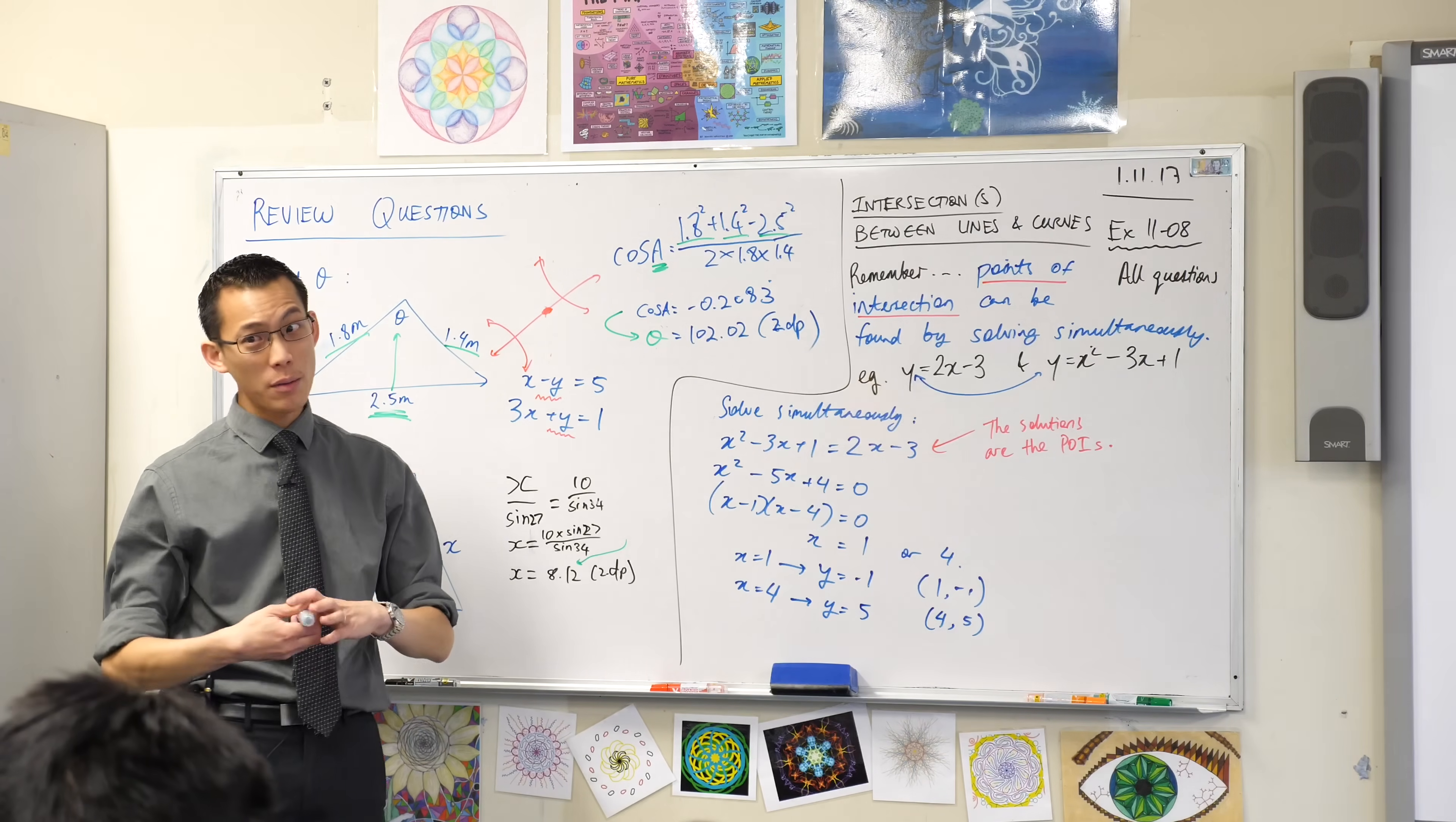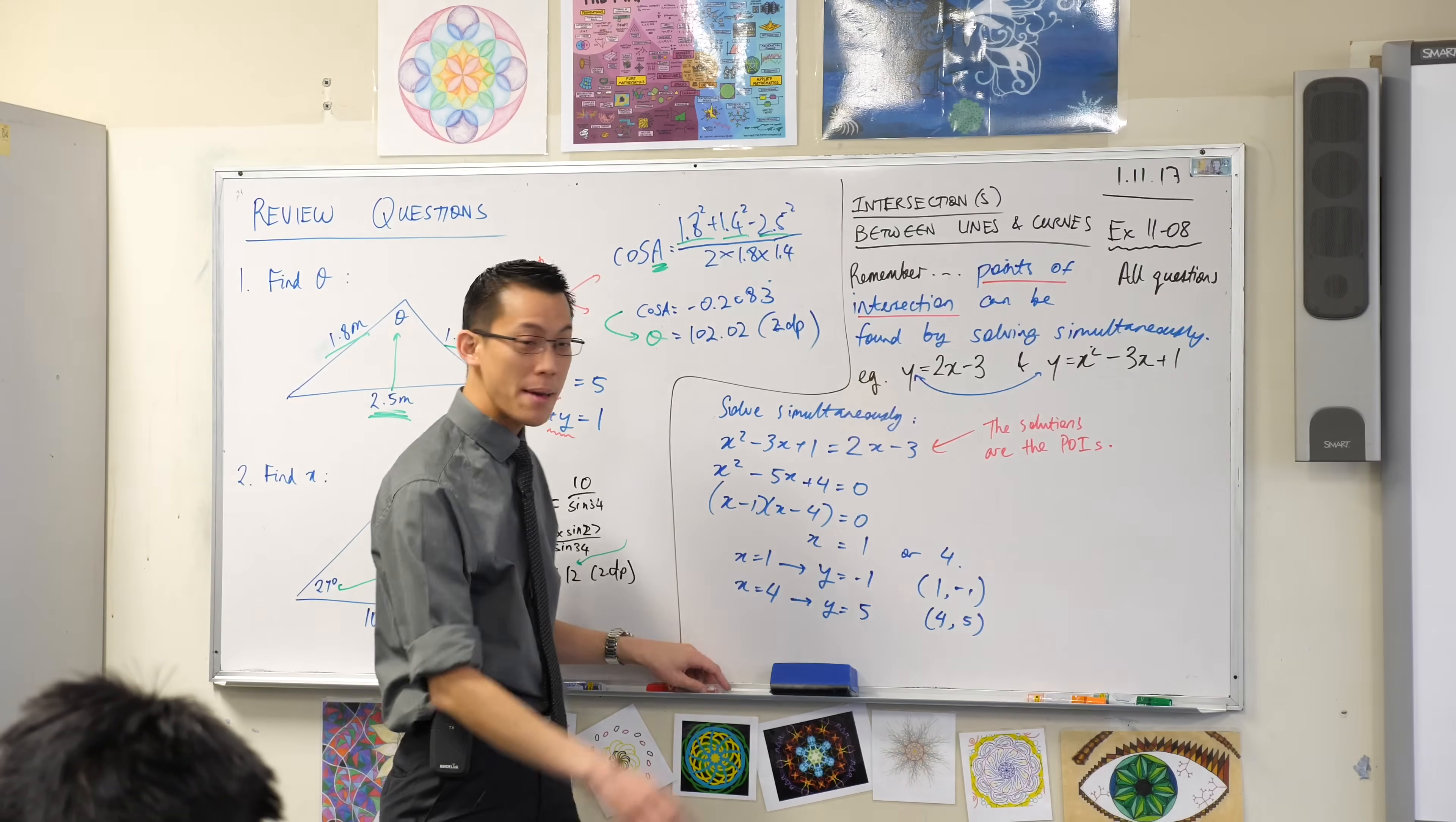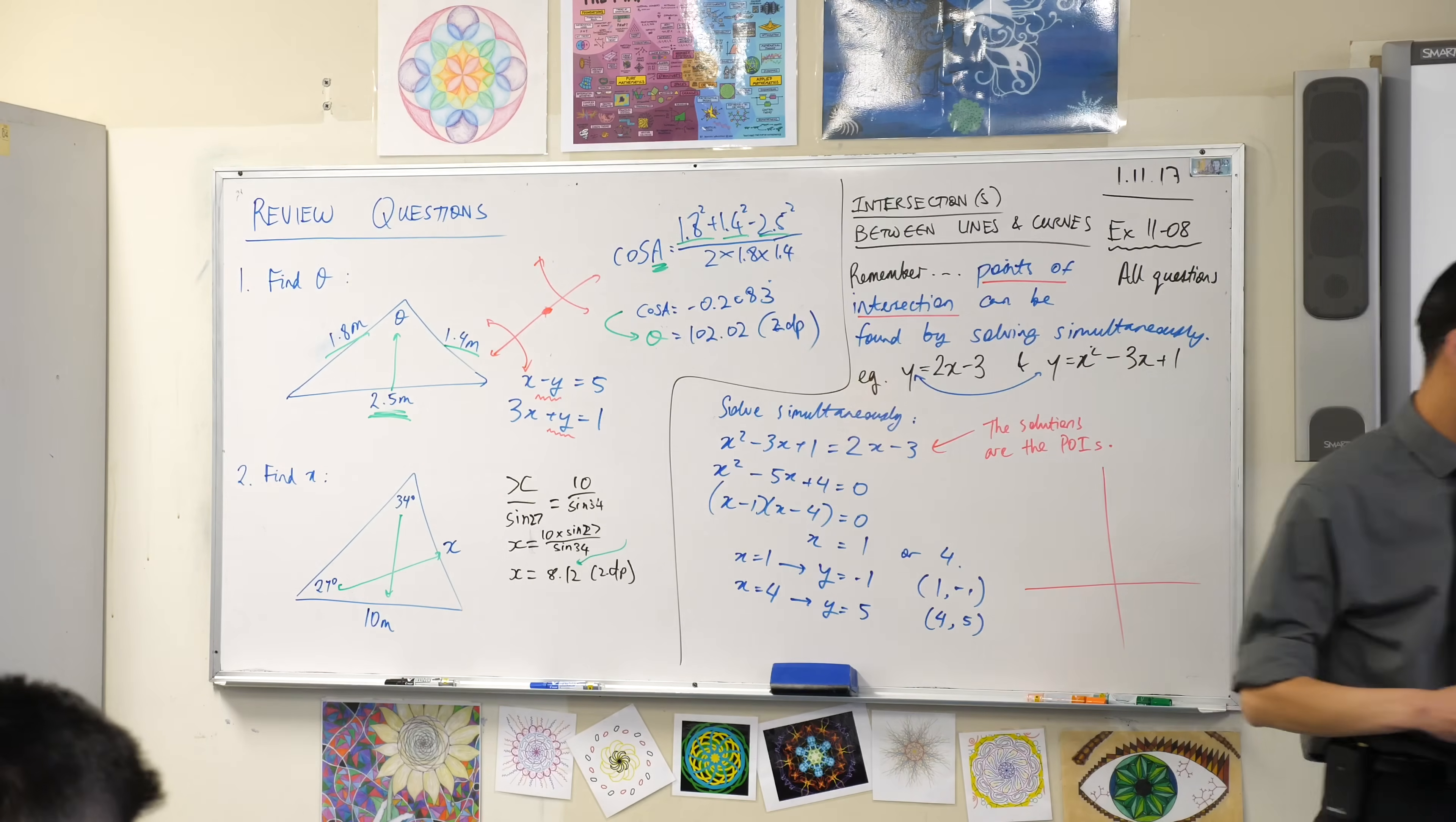Now, if that was the only question, then cool, I am done. But just for the sake of it, I just want to see what this looks like. Maybe just roughly, this doesn't have to be beautiful, don't even bother using a ruler, just draw up a little set of axes over here.